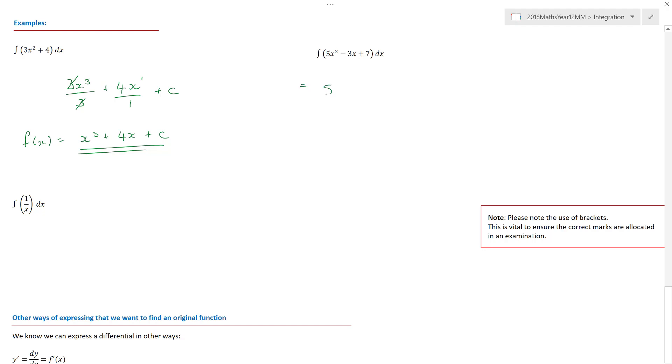Same situation here. That's going to be 5x cubed on 3, minus 3x squared on 2, plus 7x. And I have to put that plus c. Is there any way I can make that simpler? Nope. And so that is effectively my answer.